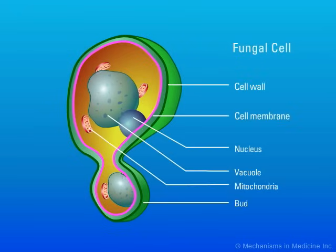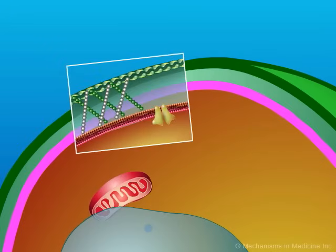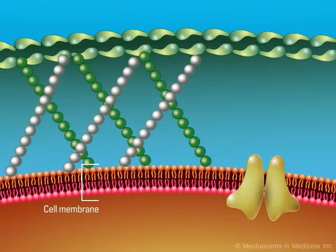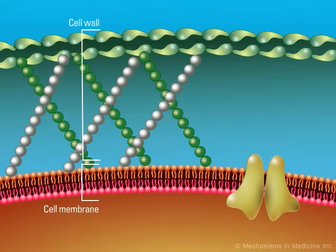The cell membrane of fungi is similar to that of other eukaryotic cells and is composed of a lipid bilayer with proteins embedded within it. A major component of the eukaryotic cell membrane is the presence of sterols, which are virtually absent from all prokaryotes such as bacteria.